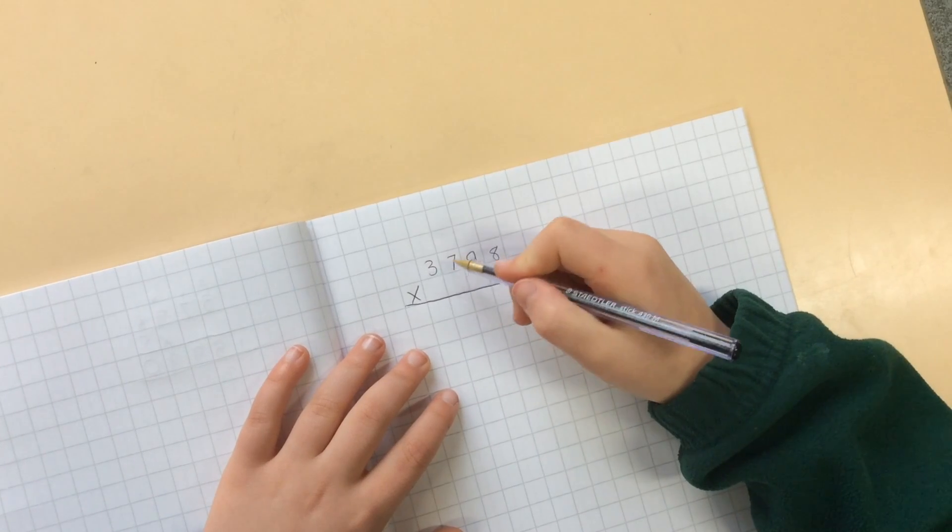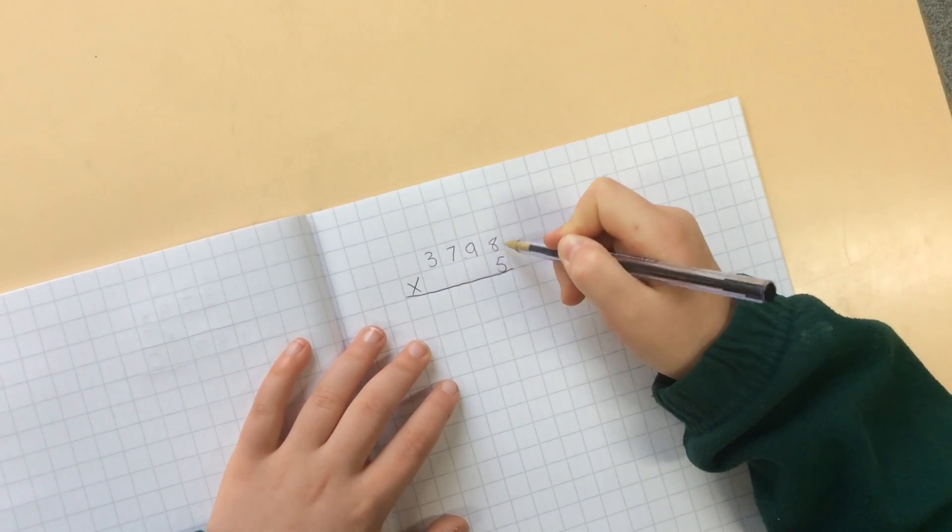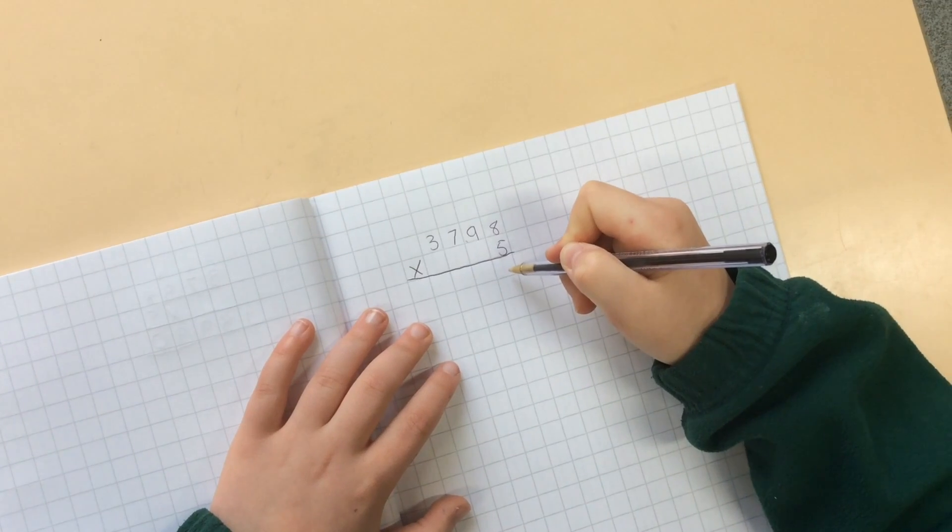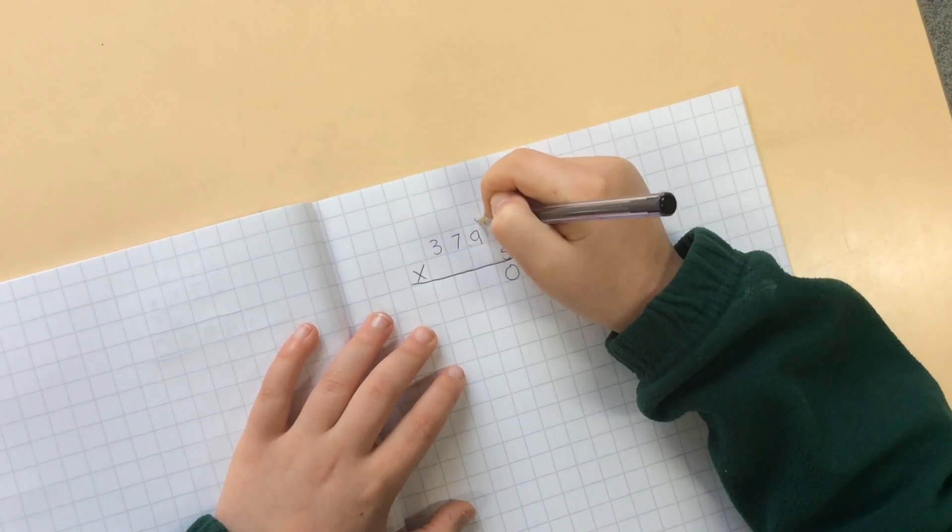So we're going to start with 37.98 times 5. So 5 times 8 gives you 40 hundredths or 4 tenths. So write my 0 there and carry the 4.